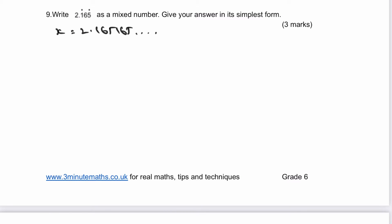what it means then is that I can multiply that by 1,000. Otherwise, I can move the decimal point three places and I get a value of 1,000x equals 2,165.165, 165. And therefore, if I take away my value of x, what it means is that I can get rid of the recurring 165.